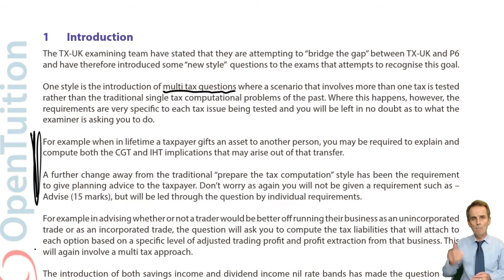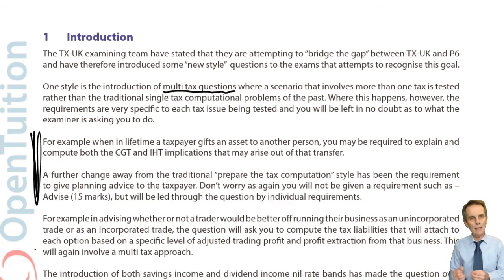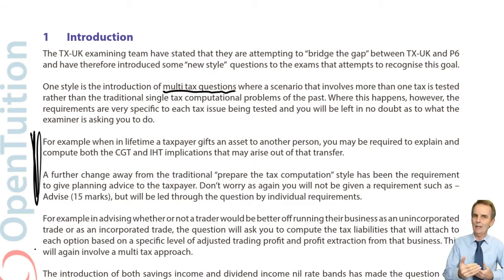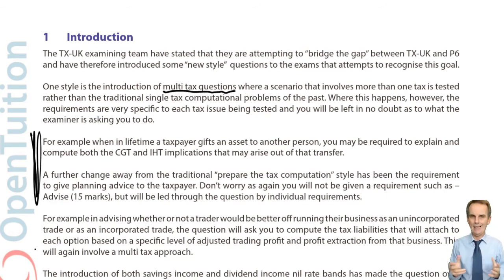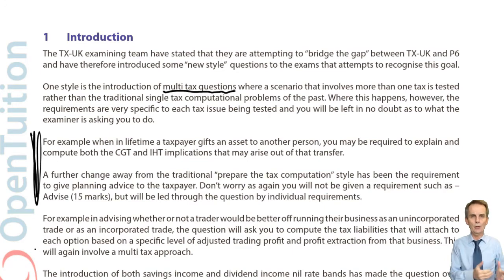So that was a multi-tax problem. In order to achieve a saving in income tax, we couldn't ignore all other taxes — we had to consider whether there would be other tax issues. There are other tax issues — the capital taxes — but neither of those capital taxes presents a taxation problem, because neither capital gains tax nor IHT liabilities would arise as a result of the transfer.